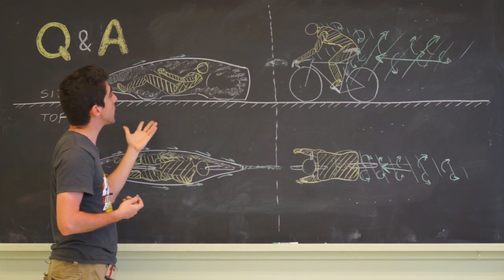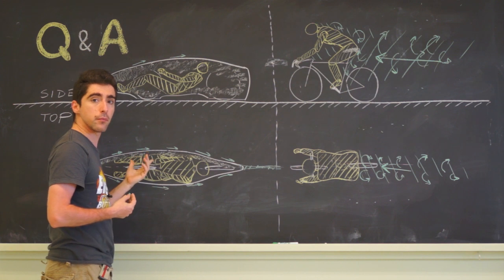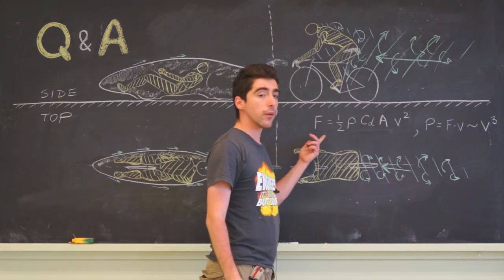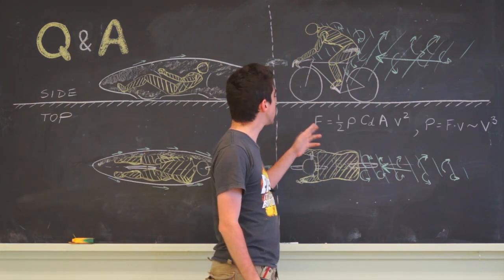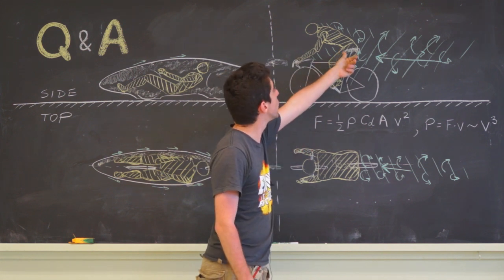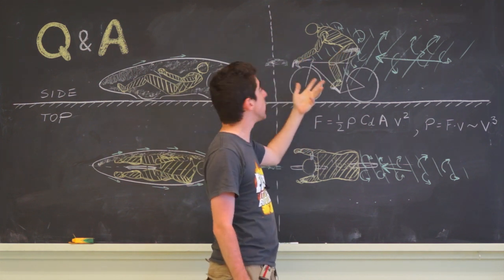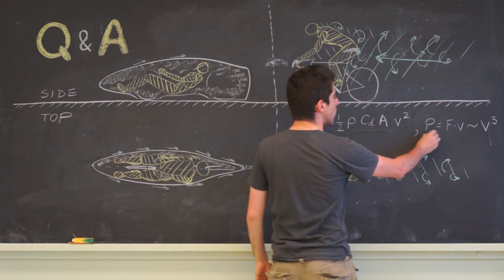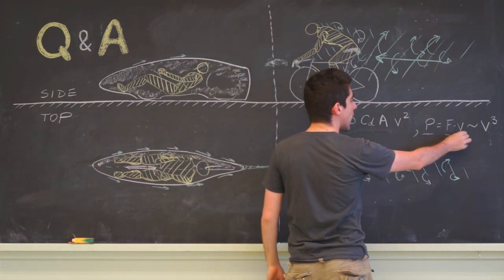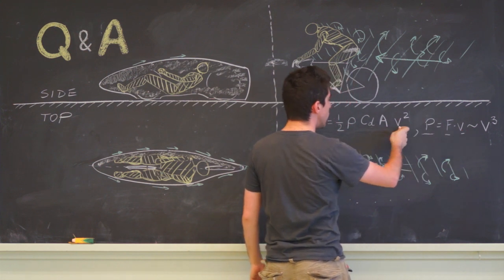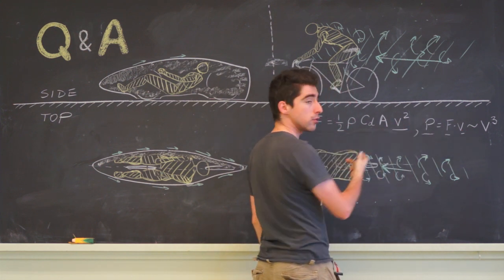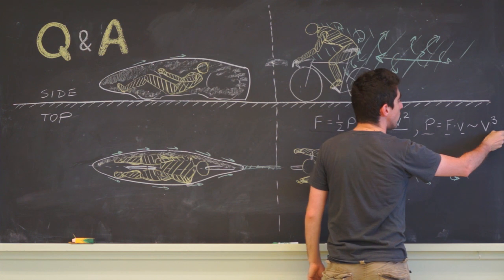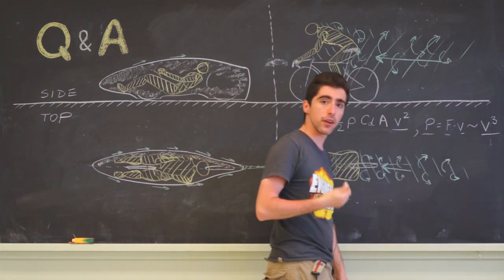And to see exactly how much more efficient, we will look at a simple equation. Now here is the equation that tells us what's the force we have to apply to keep each vehicle moving forward. Power is equal to that force times velocity, and this force is proportional to the square of velocity. So the power is proportional to the cube of velocity.